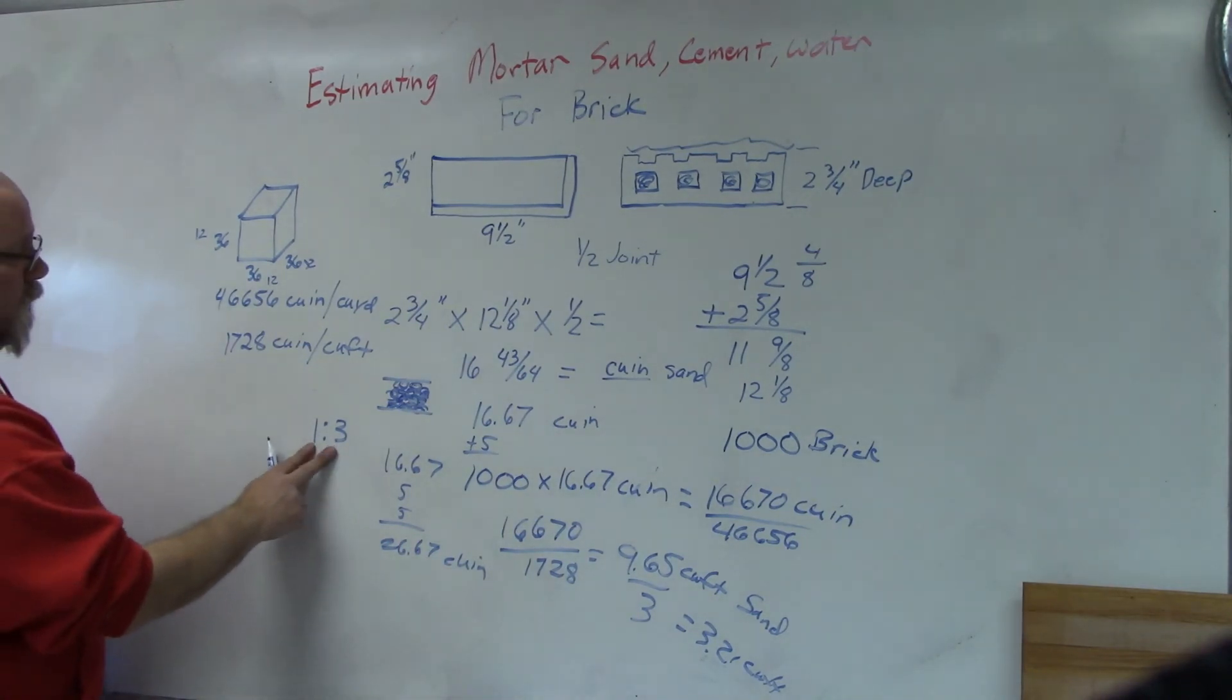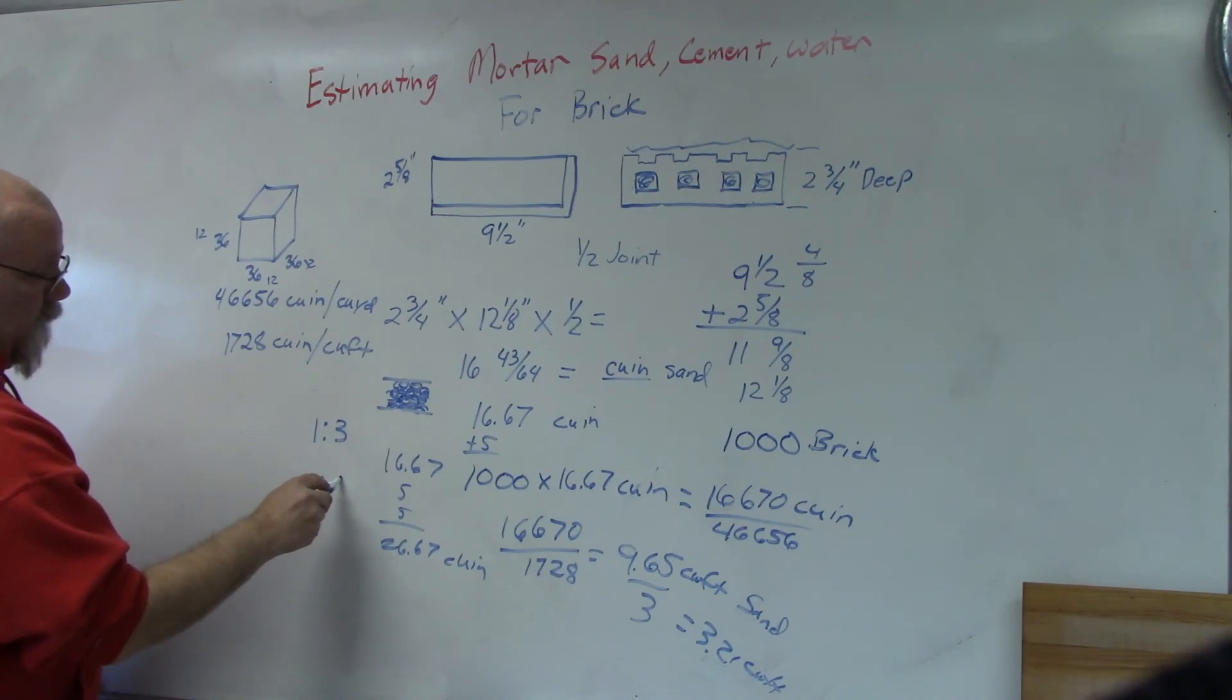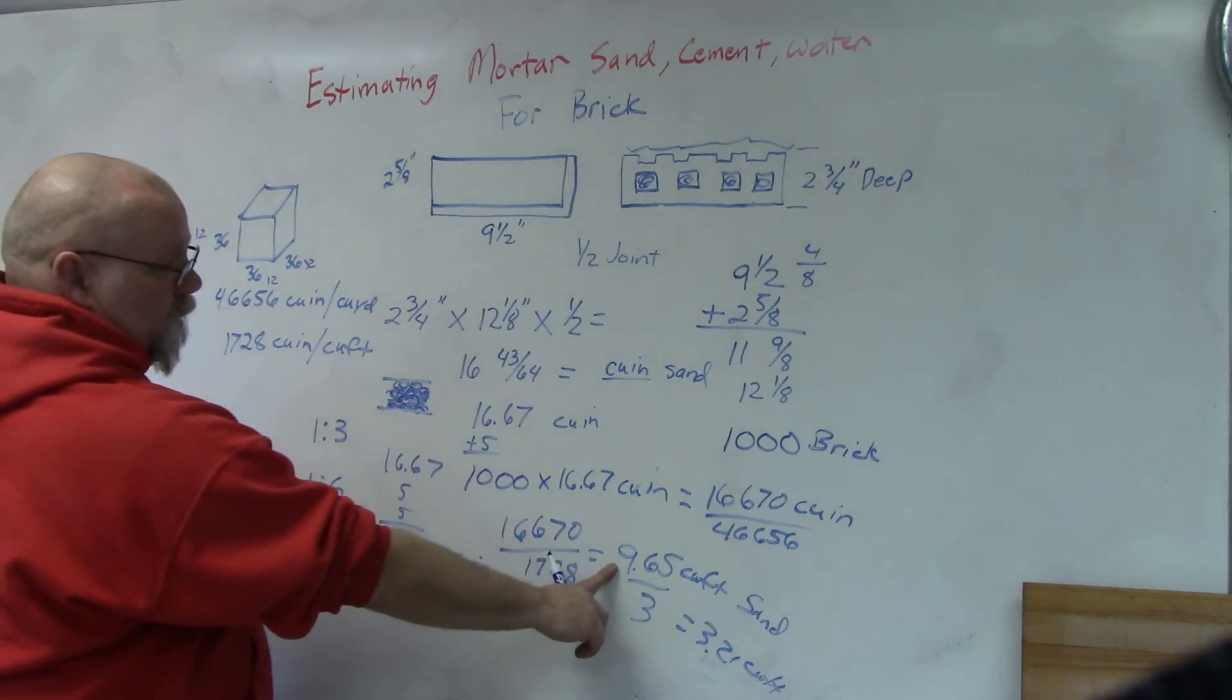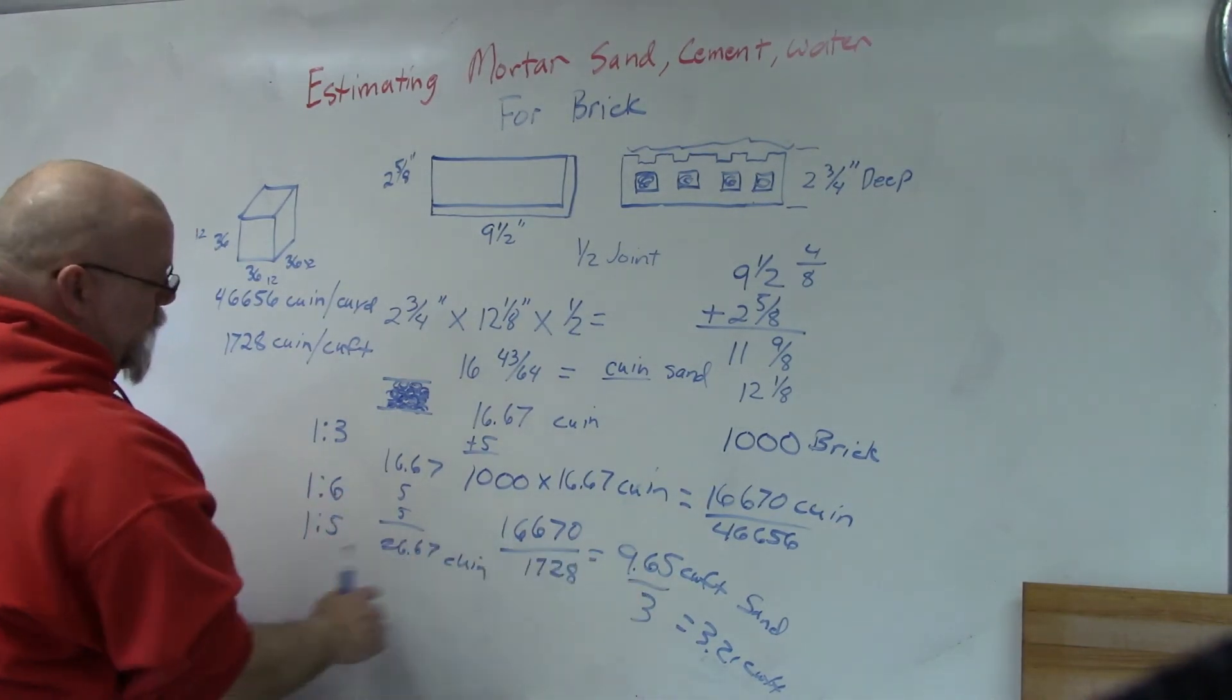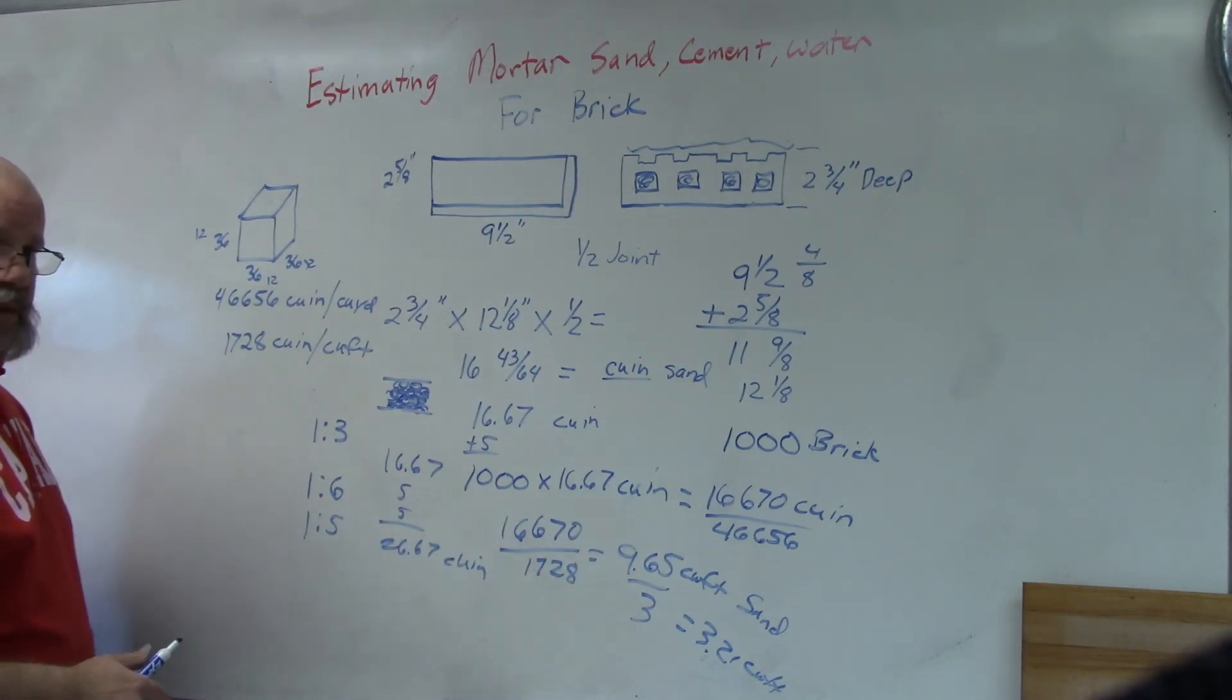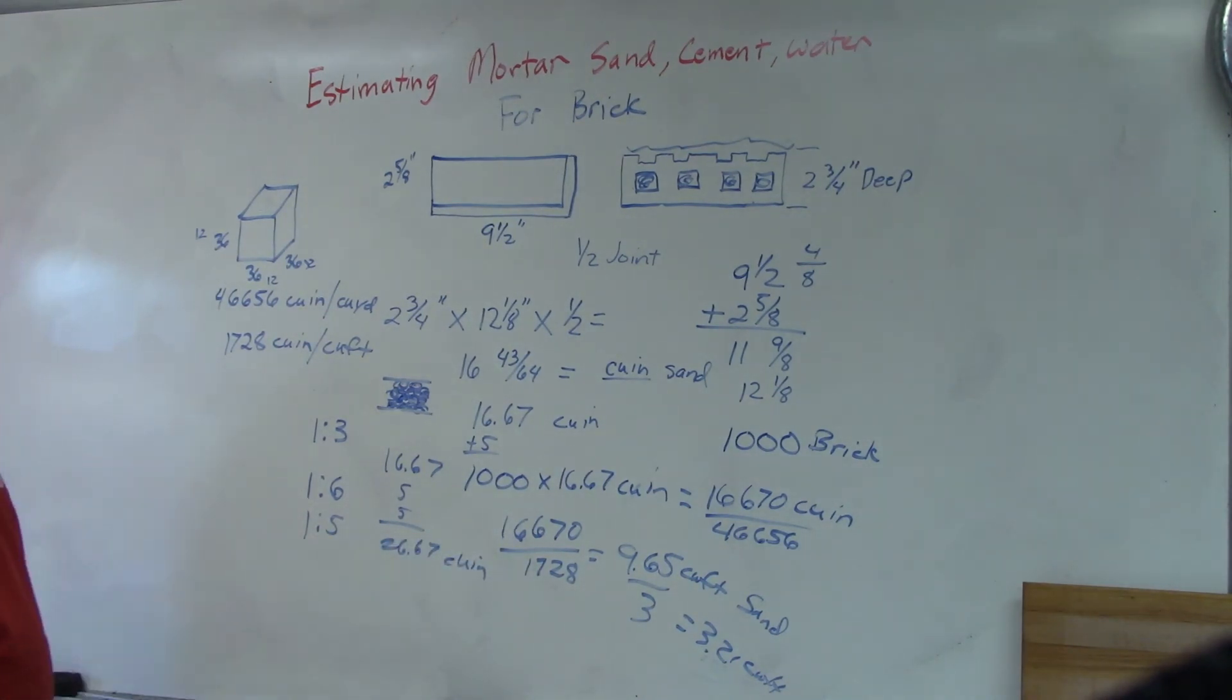If it's a load-bearing wall. Now if it's a non-load bearing wall, it's just a fascia, a facade, you could go to maybe 1 to 6 or maybe 1 to 5. Then you would go back here with your cubic feet of sand and divide it by six or five, and then that would give you the amount of cement that you need.